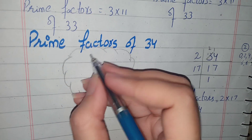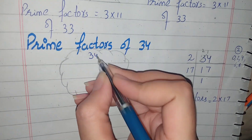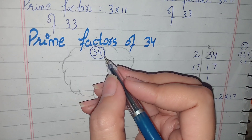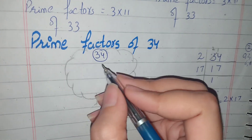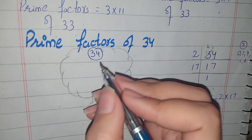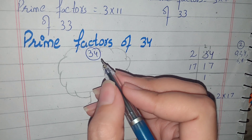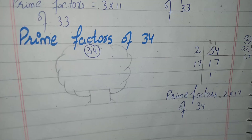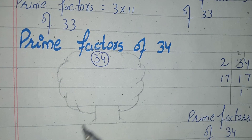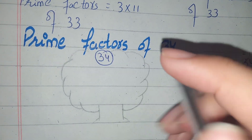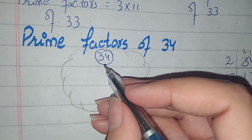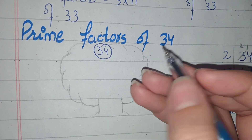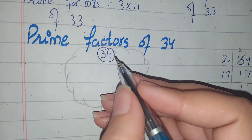This is the division method. Now this is the factor tree method. First of all, we check if the number is a composite number. A composite number is a number which has more than 2 factors. The factors of 34 are 1, 2, 17, and 34 — more than 2. So we call this a composite number.